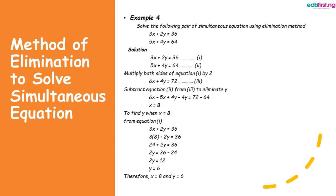For the next example, we have 3x plus 2y equal to 36 as equation 1, and 5x plus 4y equal to 64 as equation 2. Looking at the coefficient of y, in equation 1 it is 2 and in equation 2 it is 4. We aim to make the coefficients equal, so we multiply equation 1 by 2 to get 6x plus 4y equal to 72 as equation 3. Now the coefficient of y in equations 3 and 2 are both 4.